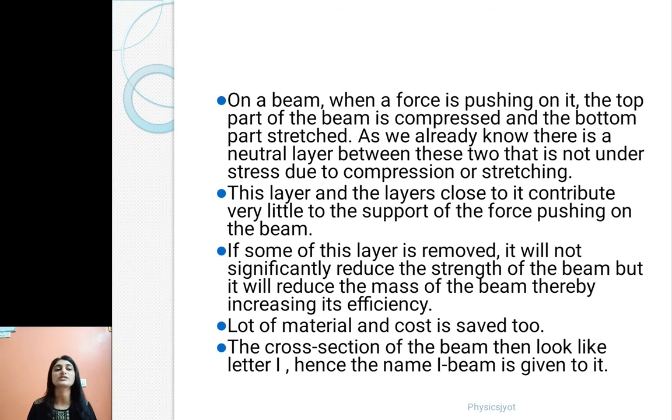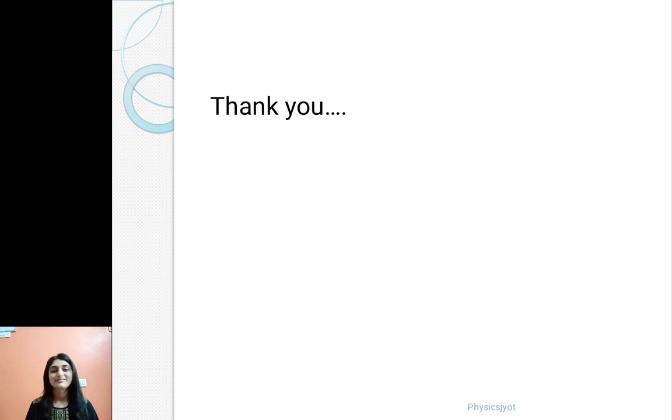If some of this layer is removed, it will not significantly reduce the strength of the beam, but it will reduce the mass of the beam, thereby increasing its efficiency. And a lot of material and cost is saved too. The cross-section of the beam then looks like a letter I, and hence the name I-beam is given to it.